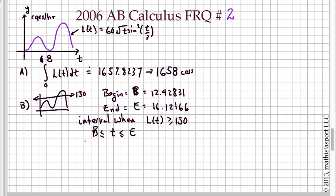Now it asks us to find the average value of L over this time. If we're asked to find the average rate of change of something, that's an algebra one calculation: y2 minus y1 over x2 minus x1.